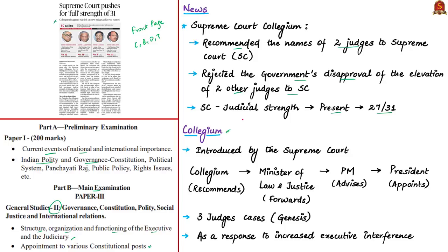The Collegium system was introduced by the Supreme Court itself. It is basically a selection panel consisting of a group of senior most judges of the Supreme Court to select the names of judges to be appointed. The Chief Justice of India forwards the recommendations to the Union Minister of Law and Justice, who then puts them up to the Prime Minister, who advises the President. Finally, the President appoints the judges to the Supreme Court. This Collegium system was introduced as a result of three judges' cases — orders passed in three different judgments regarding the appointment of judges.